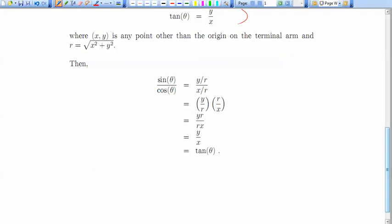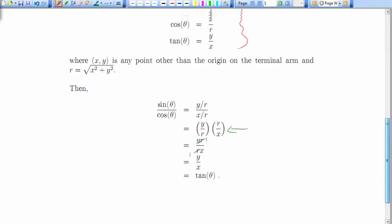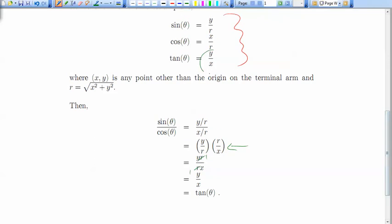And that gives me y over r times r over x. Multiplying that together, and then cancelling out the common factor of r, we end up with y over x, which we then recognize as tan of theta.